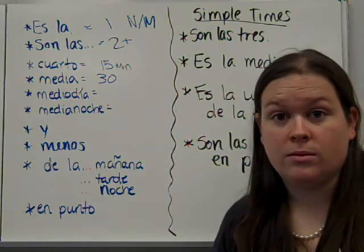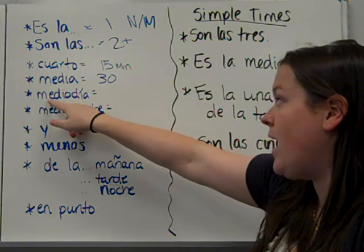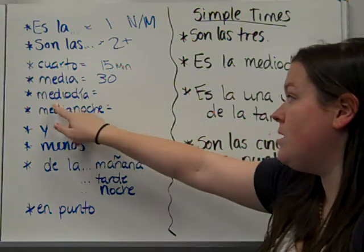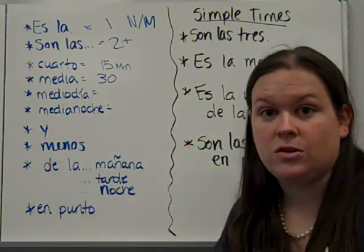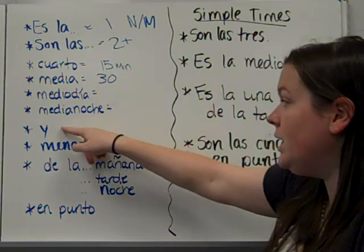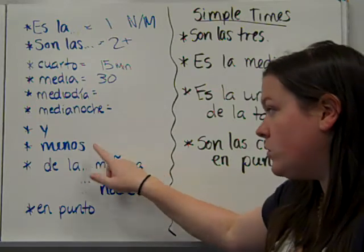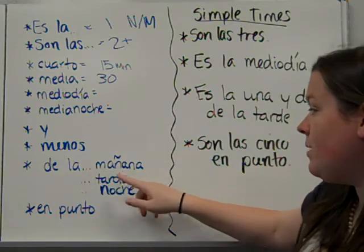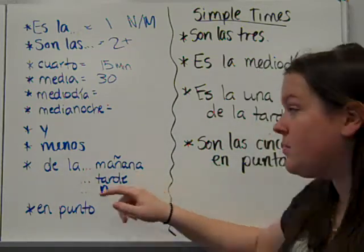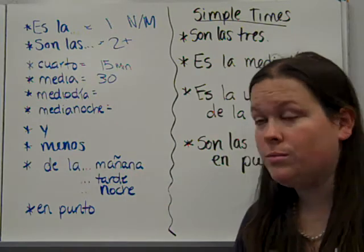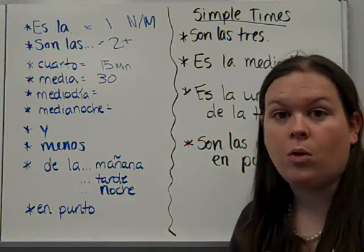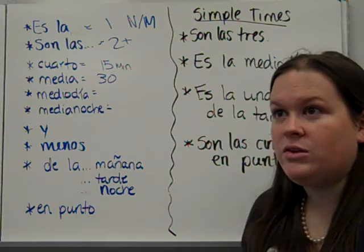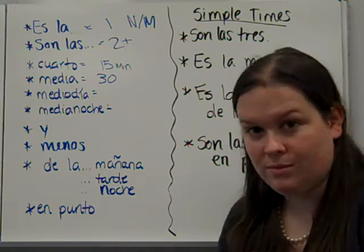Mediodía means noon. And if you look at it, half, so halfway through or the middle of the day. Middle of the day, noon. Medianoche is in the middle of, not the day, but middle of the night. So not noon, but midnight. Y just means and. Menos means minus. So y you would add, menos you're subtracting. De la mañana means in the morning. Mañana, morning. De la tarde, in the afternoon. De la noche, at night or in the evening. And en punto means it's on the dot. So if it was three on the dot, I would say, son las tres en punto. And that's it.